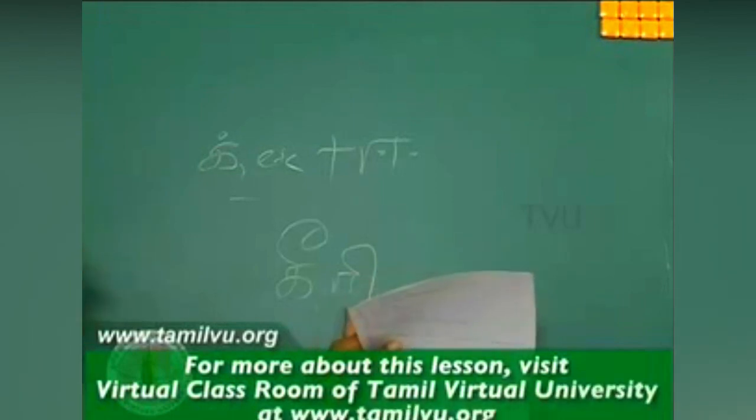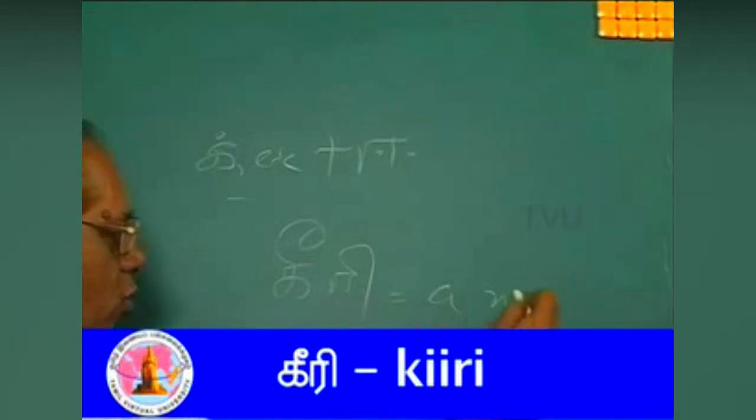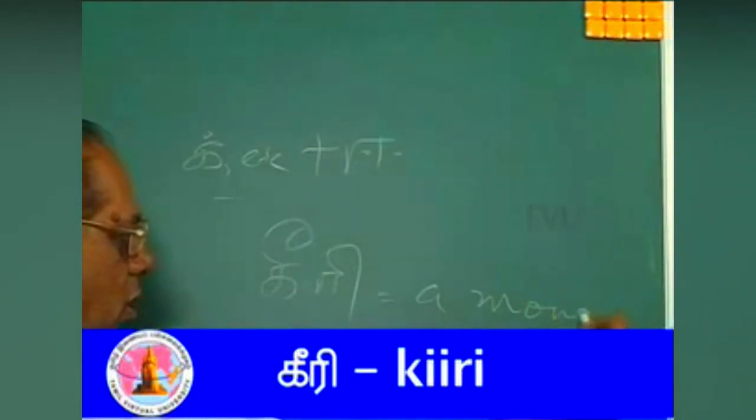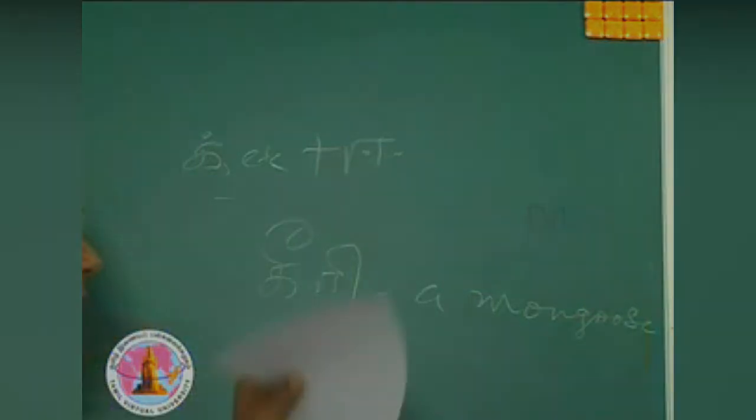This is ree, with short ee. This is with long ee, and ree is with short ee. Hee, ree, ree, ree, ree is the mongoose. Hee, ree.